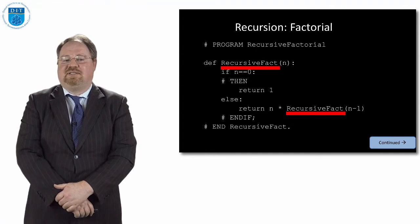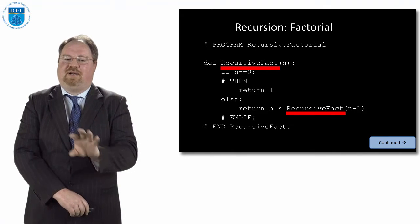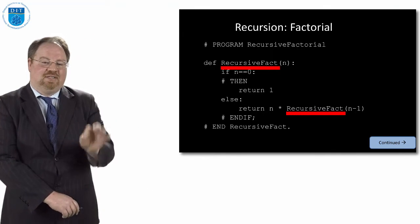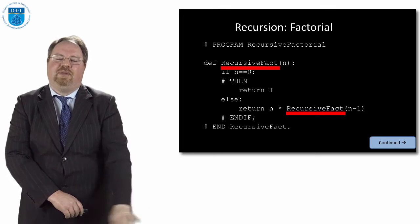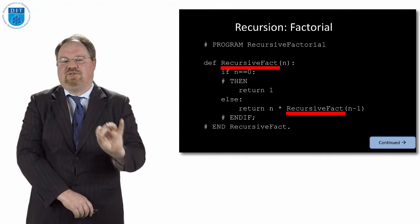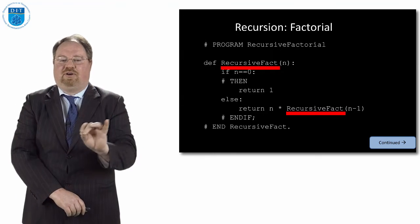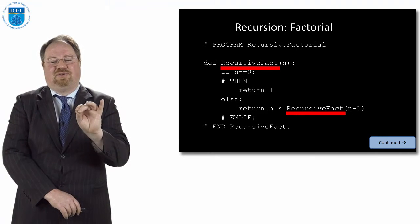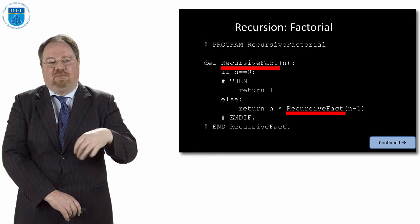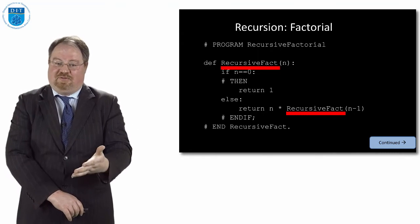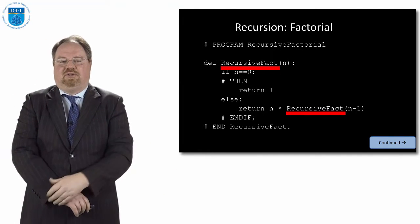If I pass in the value of 4, it checks if n is 0. Is 4 equal to 0? No. So it goes to the else and says return 4 multiplied by recursive_fact(3). Recursive_fact(3) checks if n is 0 — it's not — so it returns 3 multiplied by recursive_fact(2). Recursive_fact(2) is not 0, so it returns 2 multiplied by recursive_fact(1). Recursive_fact(1) is not 0, so it returns 1 multiplied by recursive_fact(0). Recursive_fact(0) returns 1, which pops back and gives 1 × 1 × 2 × 3 × 4.